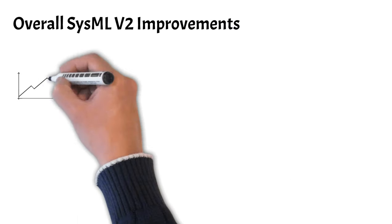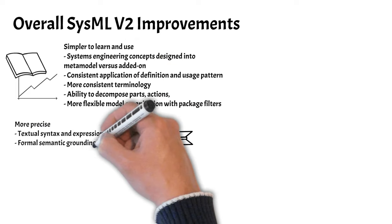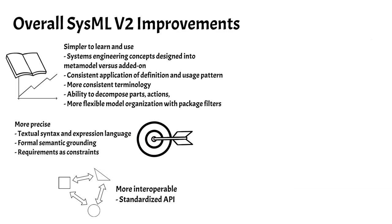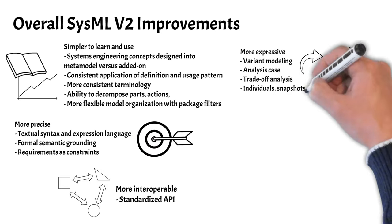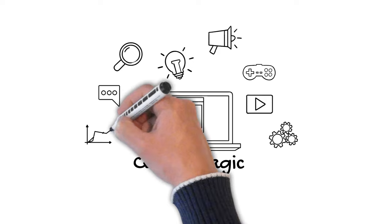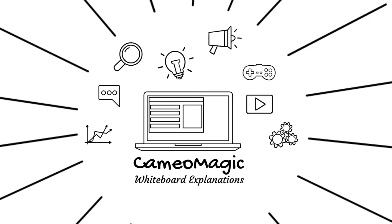To review, SysMLv2 is more straightforward and easy to learn, more precise in both scripting syntax and language terminology, more interoperable due to the standardized API, more expressive, and more extensible than its predecessor. Tool vendors are currently working to incorporate the SysMLv2 language improvements. We estimate SysMLv2 to be commercially available for beta releases late 2024. We hope you enjoyed the video — please check out our other educational content and subscribe.